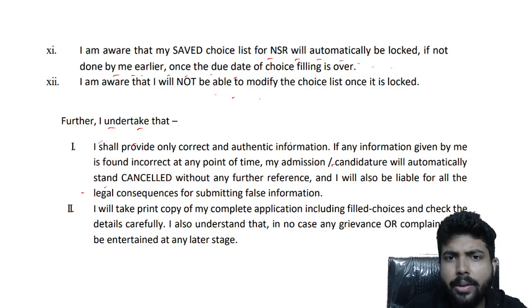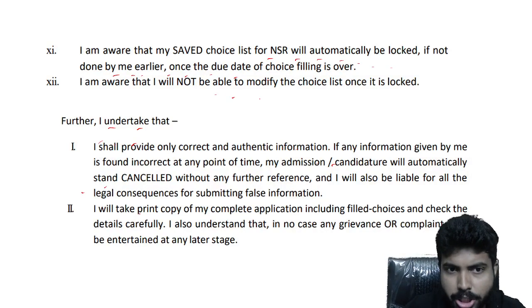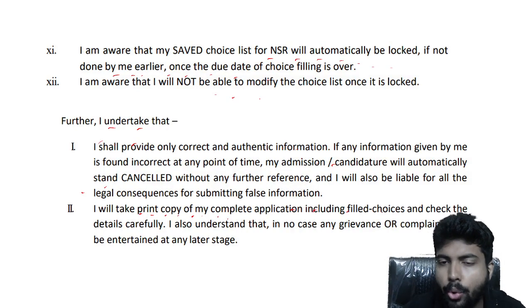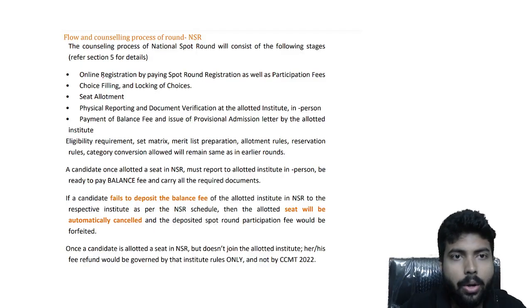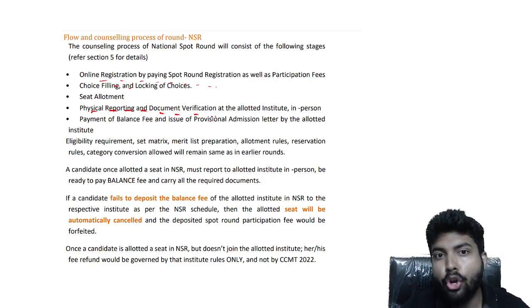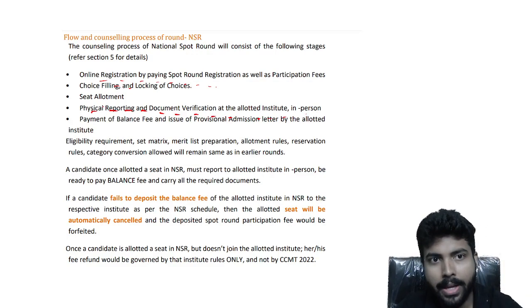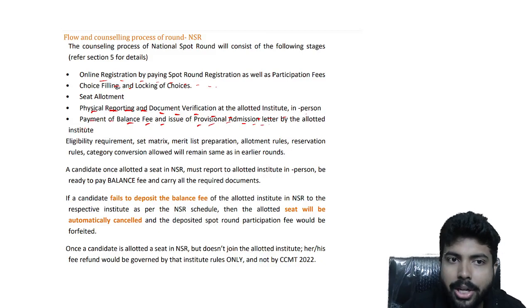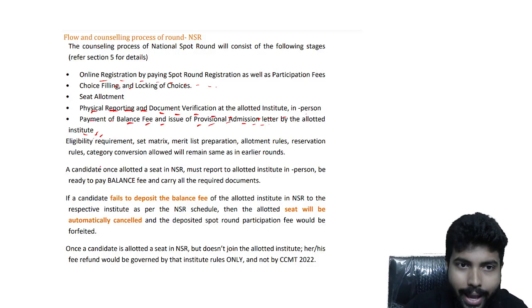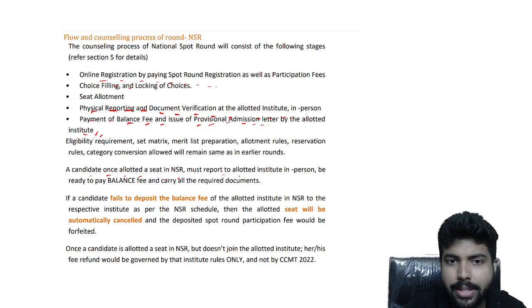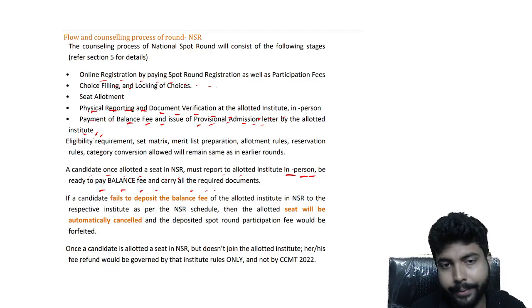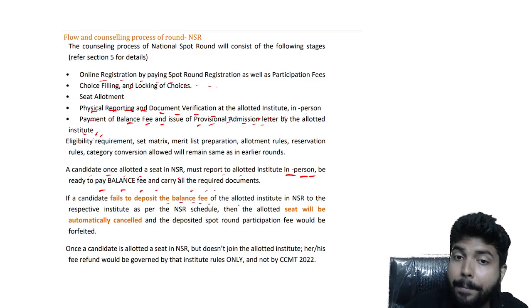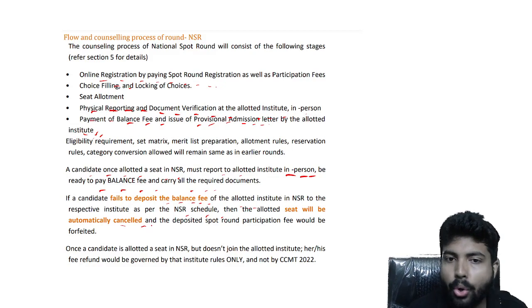You should take a print copy of your complete application including filled choices and check all details carefully — in no case will any grievance be entertained. The process involves: online institution locking by paying spot round choice fee, physical reporting and document verification at the allotted institute in person, payment of balance fee, and issue of the provisional admission letter by the allotted institute. Be ready to pay the balance fee and carry all required documents — failing to do so will get your admission cancelled.